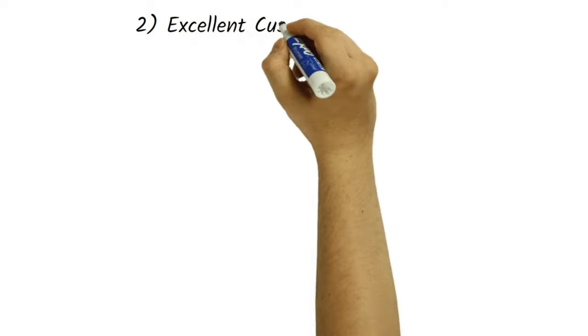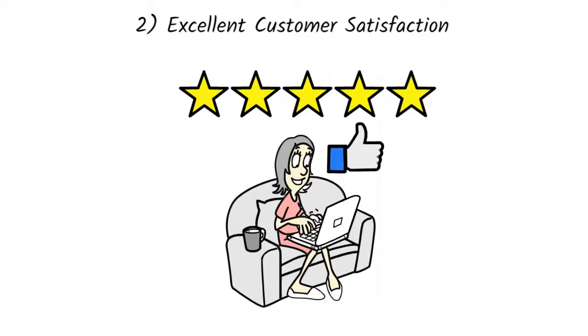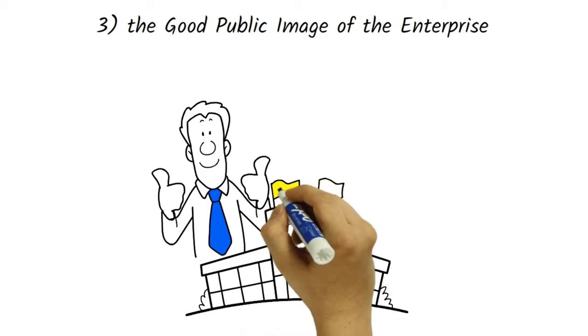Second, excellent customer satisfaction. It is also an important step because here we are calculating the customer's feedback by monitoring them through many online surveys and from the ground level which also helps us to improve our quality. Third, the good public image of the enterprise. By this, we can create a good impression in public under TQM and by this company grow more and achieve its target.